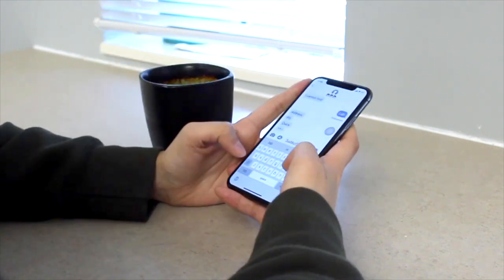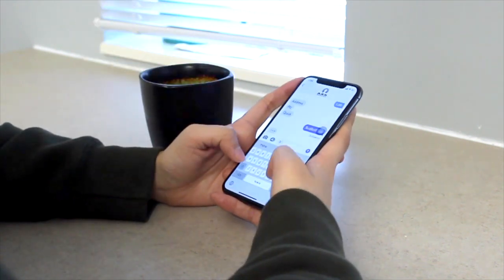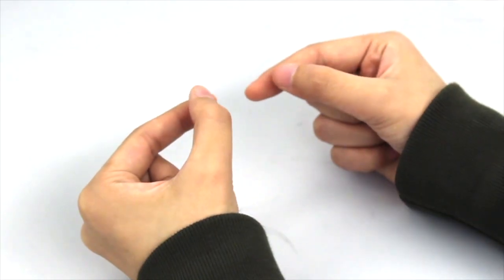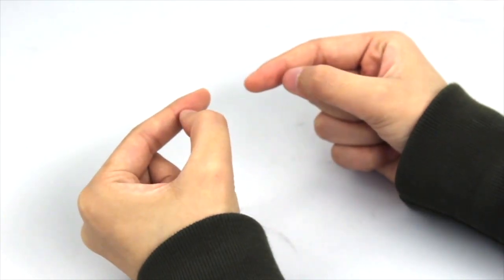On touchscreen devices, typing using both hands can be faster than using one hand. Tapping on two index fingers is fast, natural, and unobtrusive.